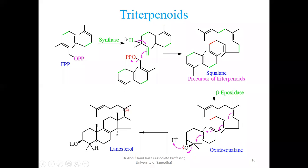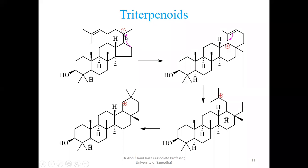Lanosterol is synthesized via this mechanism. The intermediate undergoes a sigma bond transfer — a 1,2-migration. The migratory group moves from the migratory origin to the migratory terminus, leading to the formation of a six-membered ring with a positive charge. This results in the formation of another carbon-carbon bond generating a more stable tertiary carbocation, which also undergoes a similar sigma bond transfer, again generating a six-membered ring.